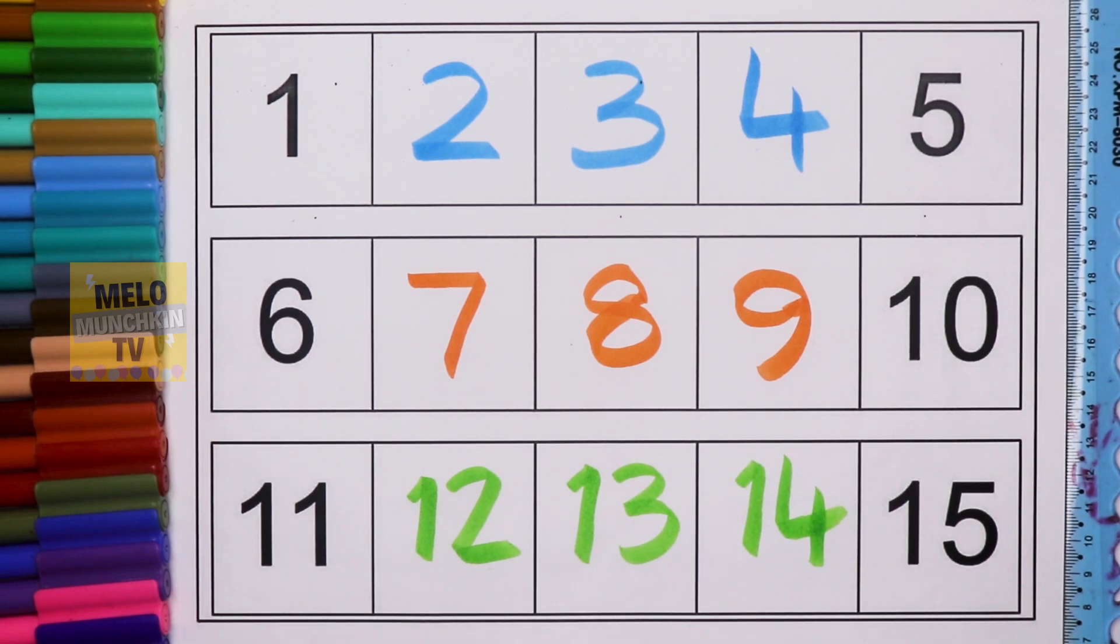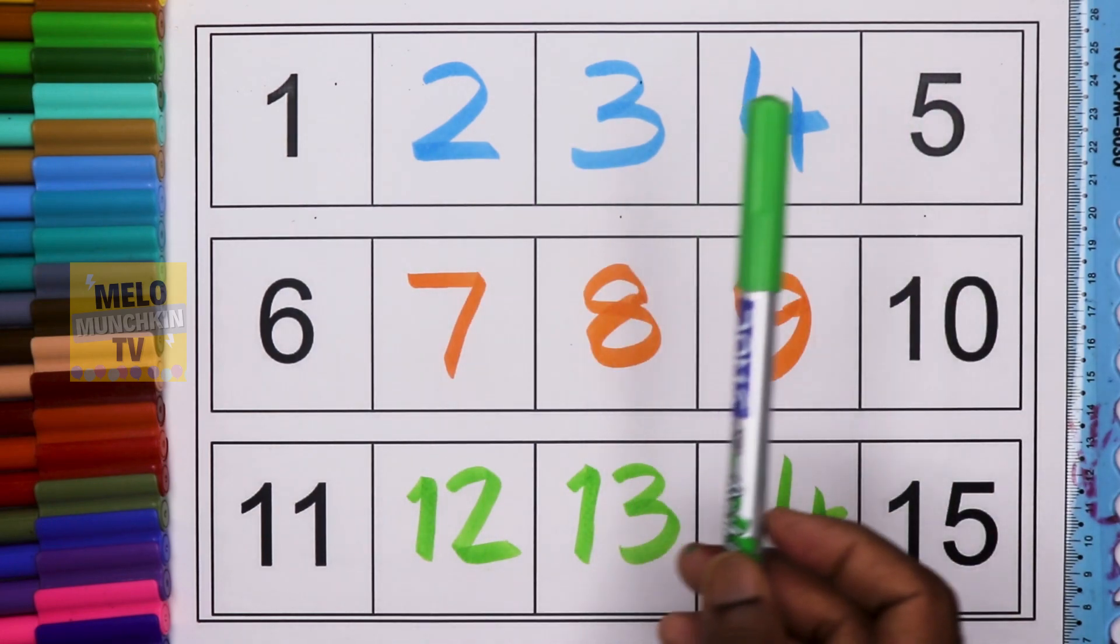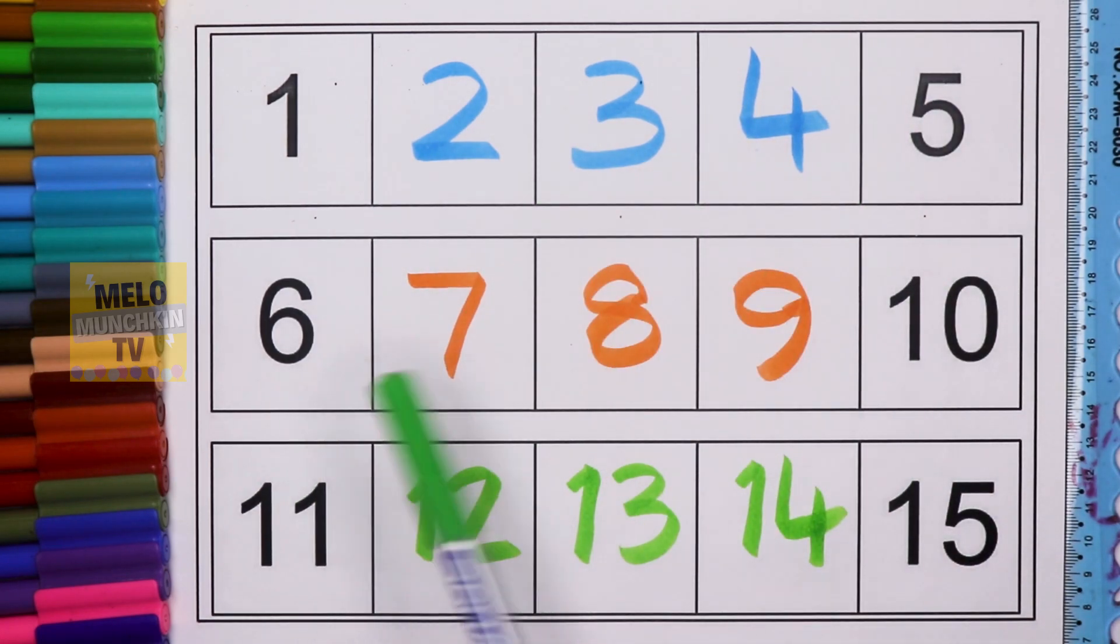So it's done. So what are the numbers we have written? Between 1 and 5 it is 2, 3, and 4. And between 6 and 10, 7, 8, and 9. And between 11 and 15, 12, 13, and 14.